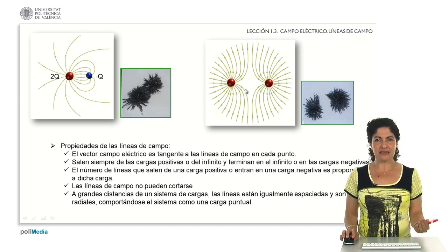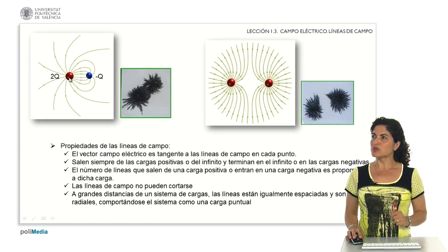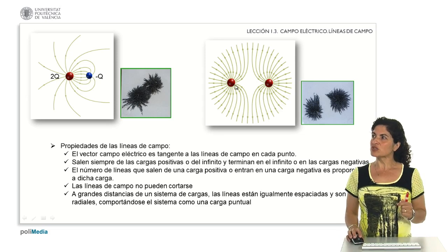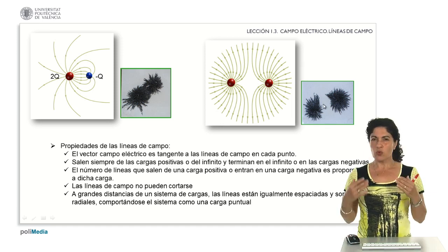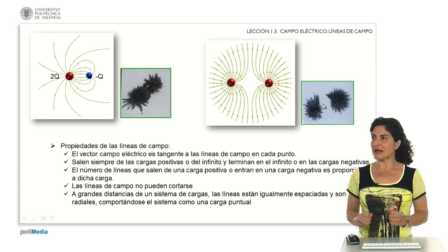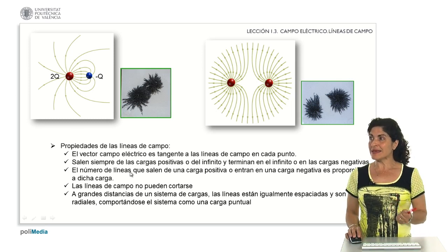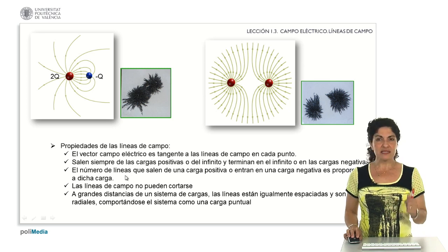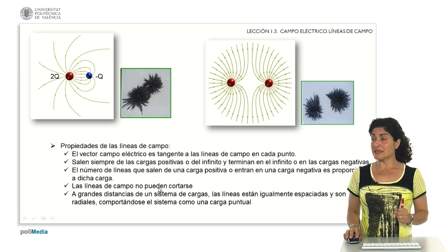Two more configurations illustrate these properties. For a positive charge of greater value than a negative charge, we see how the field lines form and acquire a particular geometry. For two positive charges, there is an intermediate field marking the repulsion, clearly visible in the real image. In summary, field lines are tangent to the electric field vector, always originate from positive charges or from infinity, and end at infinity or at negative charges. The number of lines leaving or entering a charge is proportional to that charge, and their density is proportional to the intensity of the electric field at that point.